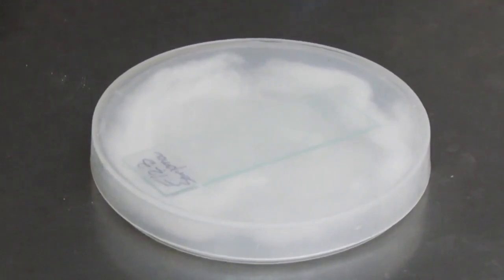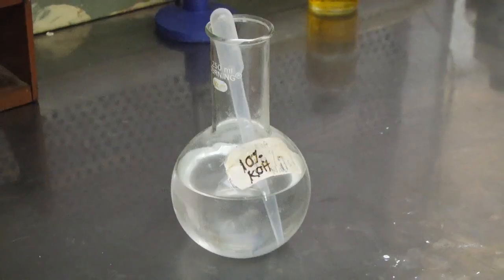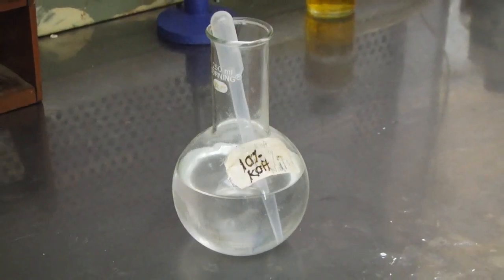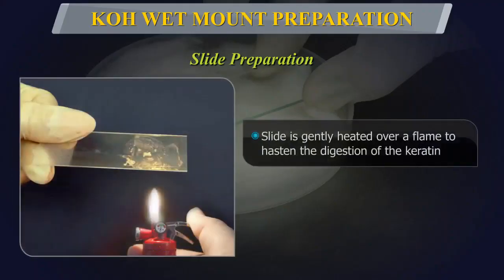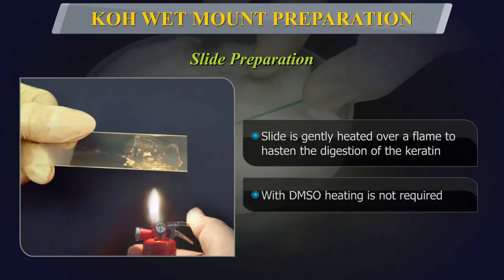Caution: as potassium hydroxide is corrosive, it should be handled with care. The slide can be gently heated over a flame to hasten digestion of keratin; however, avoid overheating as it may result in crystallization of the slide material. When using DMSO, heating is not required.